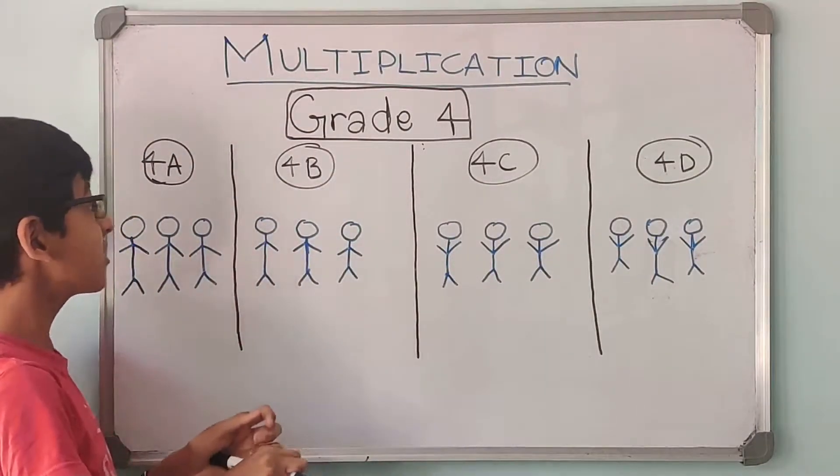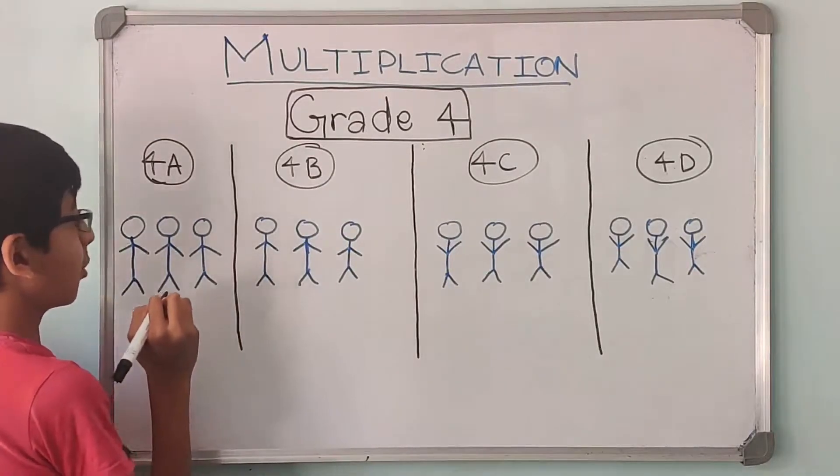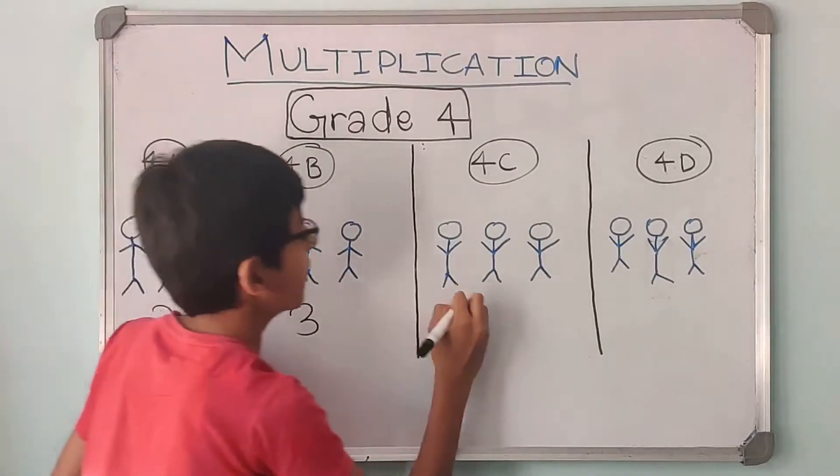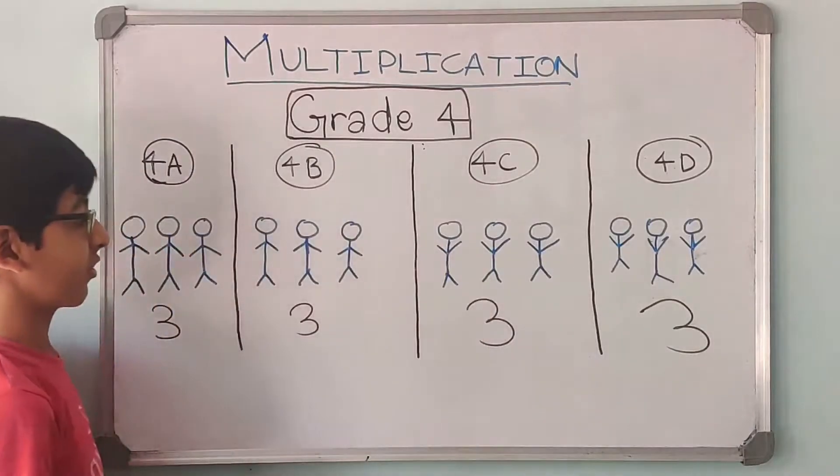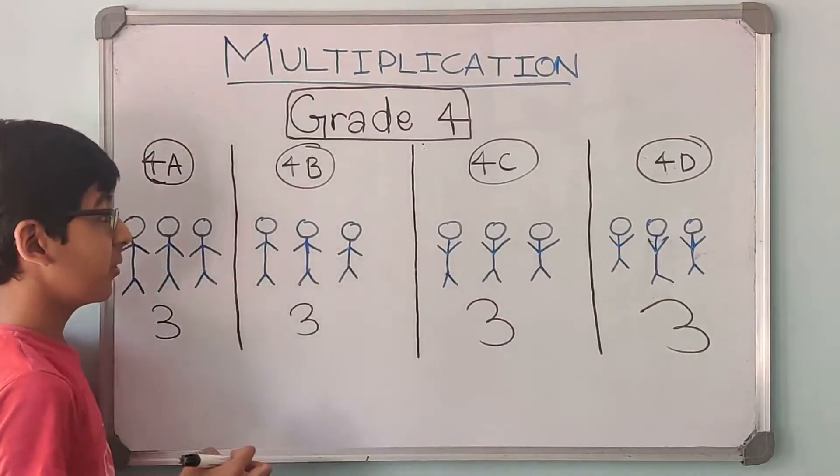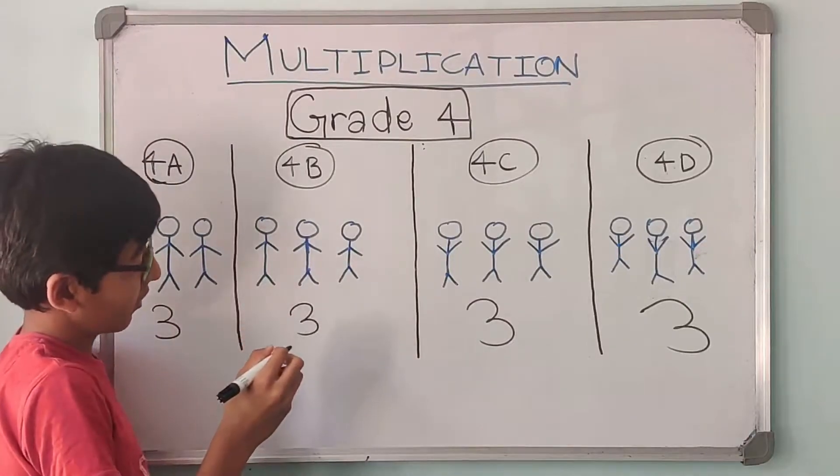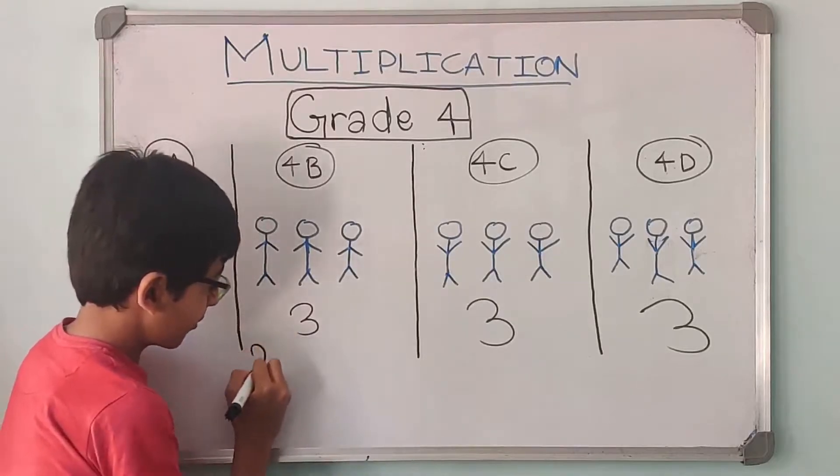Now in each section there were 3 students. In 4A there were 3 students, in 4B there were 3 students, in 4C there were 3 students, and in 4D also there were 3 students. Now we are asked what is the total number of children who are studying grade 4. How will we find it?